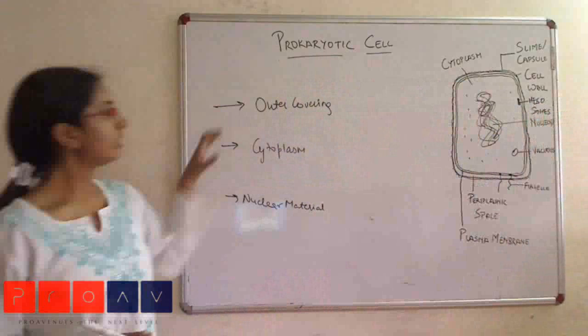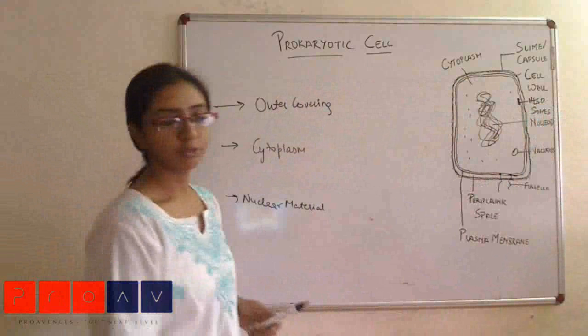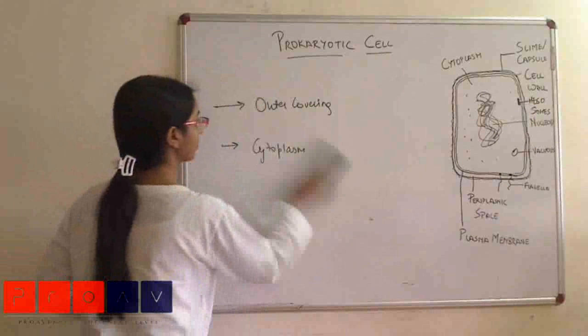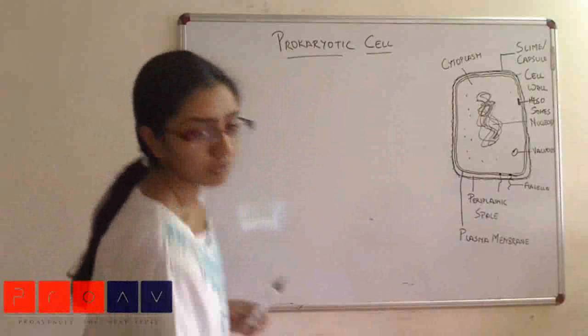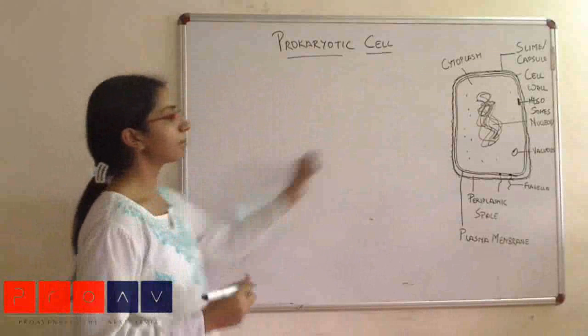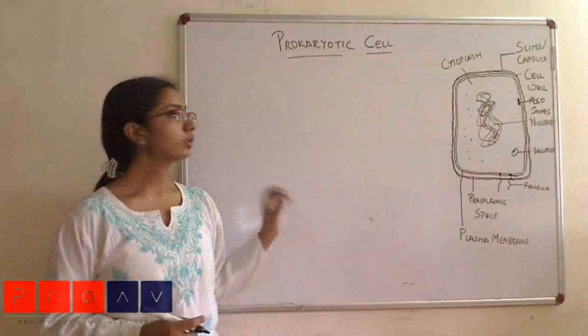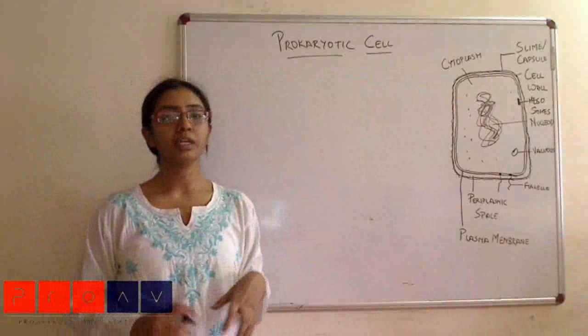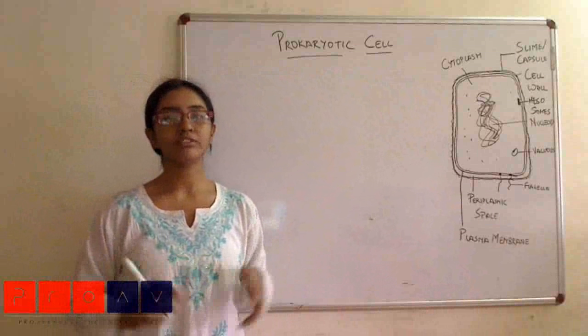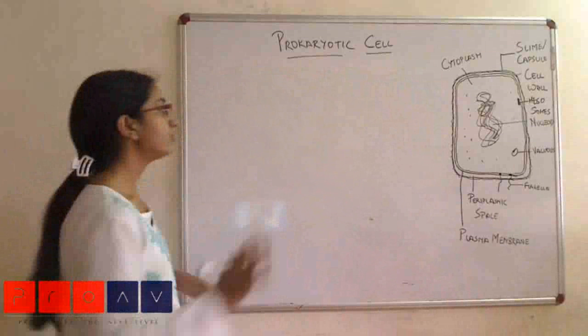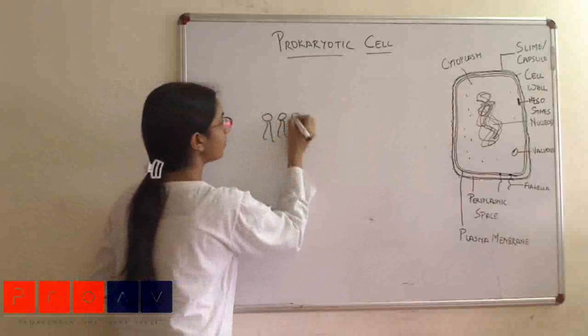First, we will discuss the plasma membrane. Plasma membrane, as you all know, is the basic bilayer structure. It's a lipoprotein structure. The composition of plasma membrane not only differs between eukaryotic and prokaryotic cells, but also within different prokaryotic cells. This is the basic structure of the plasma membrane.